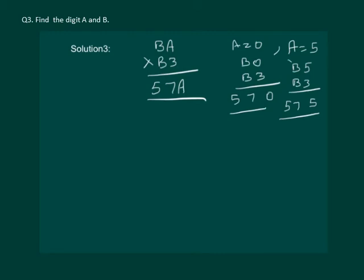Now look at B. Say we take B equal to 1. For B equal to 1, A can either be 0 or A can be 5. Let us try it out.